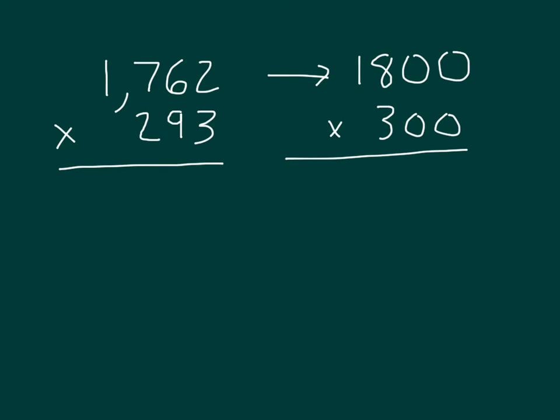Since I'm dealing with hundreds, I will place two zeros, and then it's 3 times 0 is 0, 3 times 0 is 0 again, 3 times 8 is 24. That's a 4 and a regroup of 2. And then we have 3 times 1 is 3 plus 2 is 5. So our estimated product is 540,000.